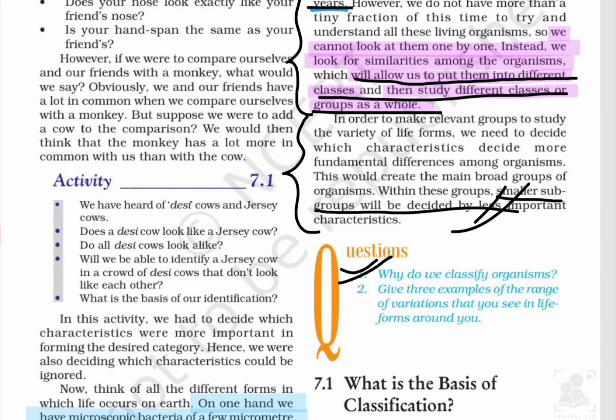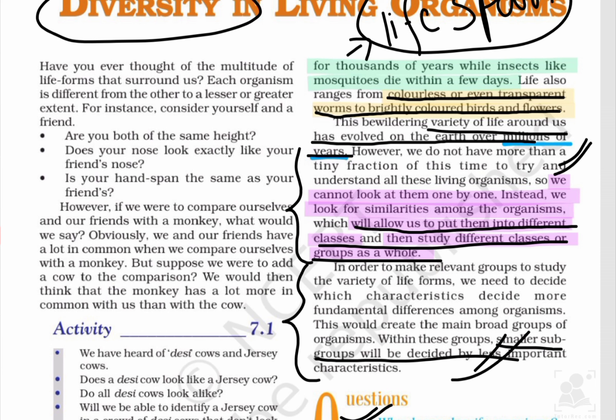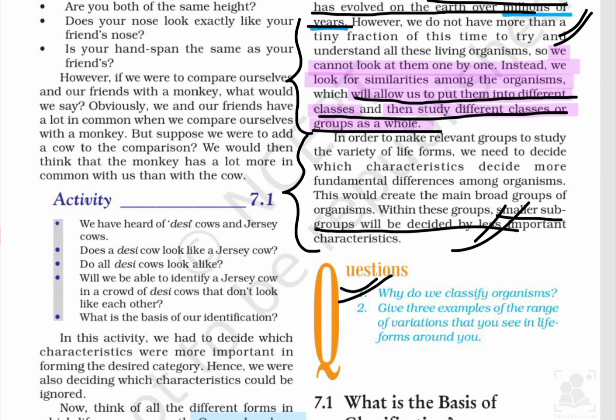NCERT ने question दिया है: why do we classify organisms? Answer है: we cannot study all organisms one by one, so we classify them into groups to study their characteristics as a whole, because organisms in a group share common characteristics। जैसे mammals — humans और lion दोनों direct birth देते हैं। Oviparous animals जो egg ले करते हैं उनमें reptiles और birds आते हैं — अलग-अलग नहीं पढ़ना, बस एक characteristic जान लिया। यही reason है कि हम लोग animals को classify करते हैं into different groups।